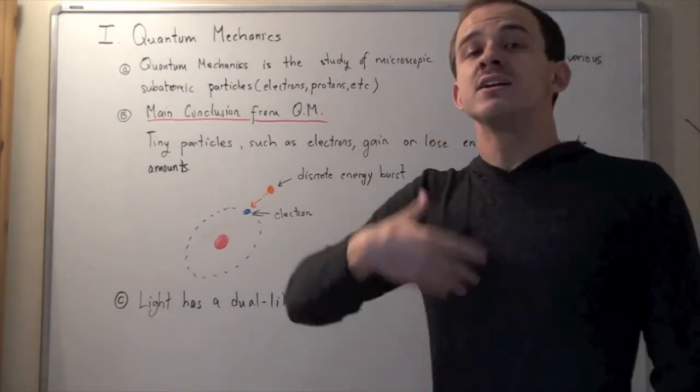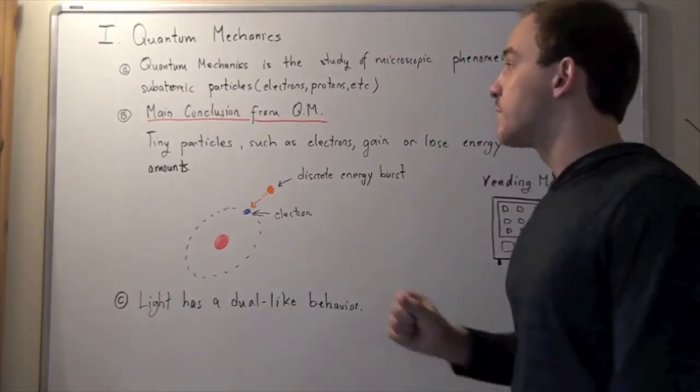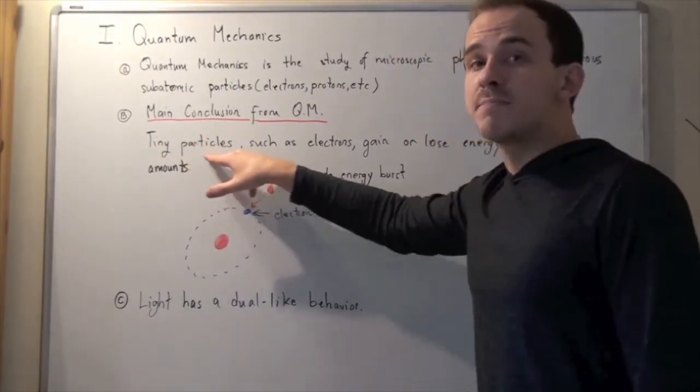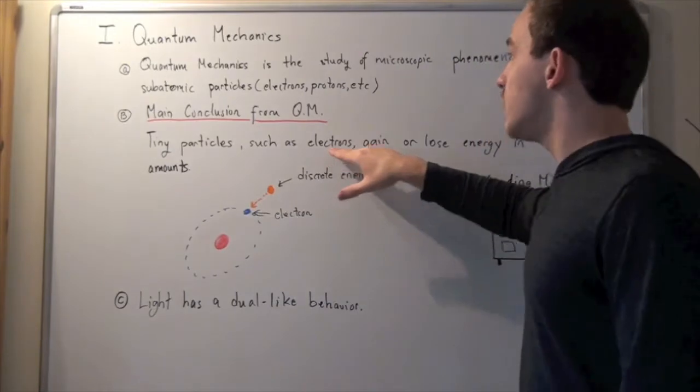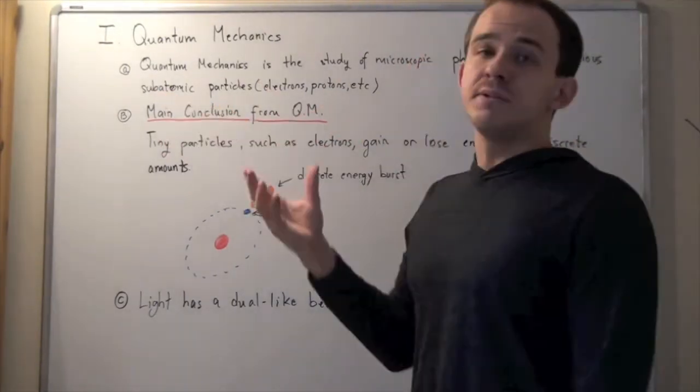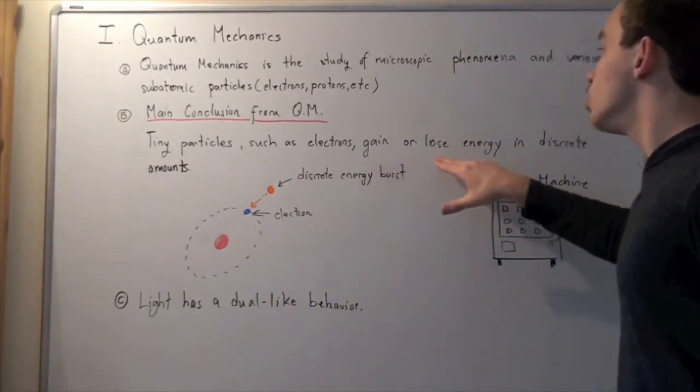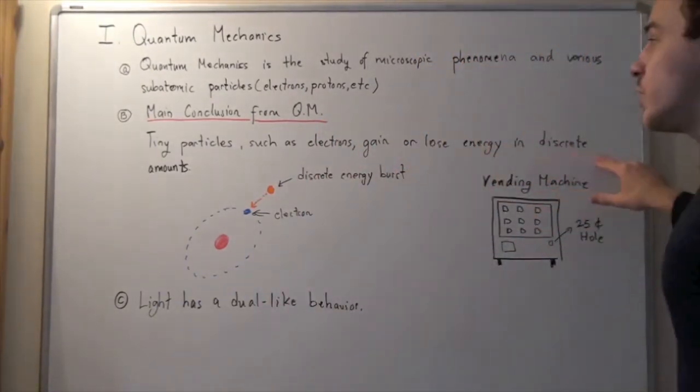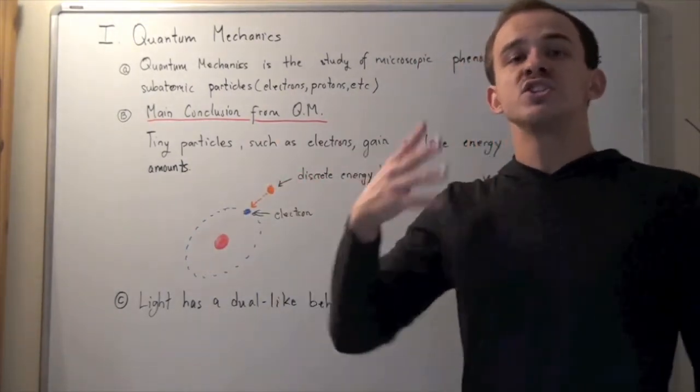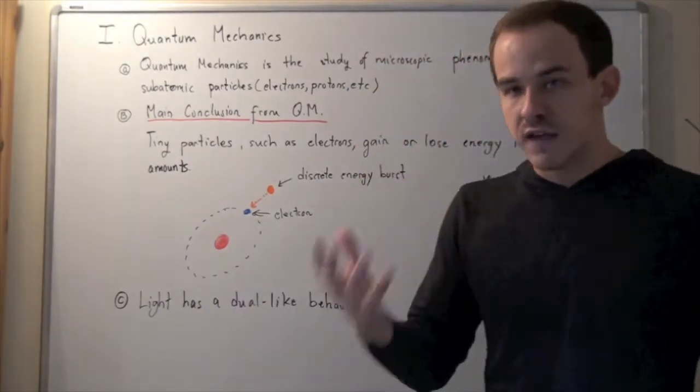Now the main idea, the main conclusion that we get from quantum mechanics is the following. Tiny subatomic particles called electrons and protons and neutrons and other particles, now subatomic simply means smaller than an atom, gain or lose energy in discrete amounts called photons. We're going to talk more about photons and what they are when we talk about the photoelectric effect.